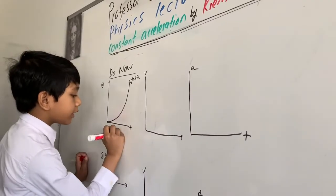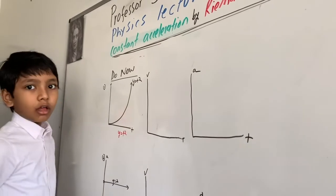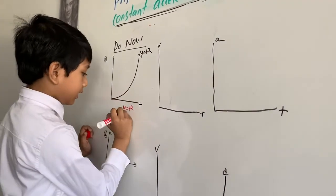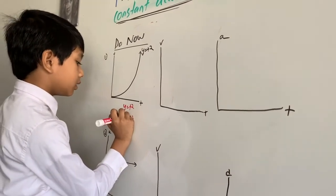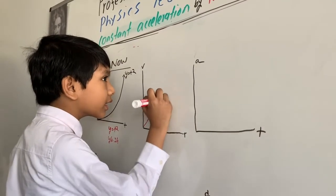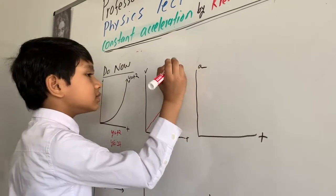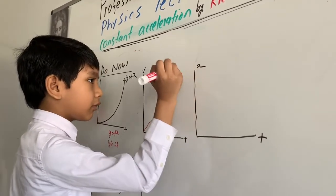So y equals t squared. If you use the power rule, we will get y prime is 2t. Don't forget to put the prime. Then I will keep the answer marker here. This would be our vt graph.